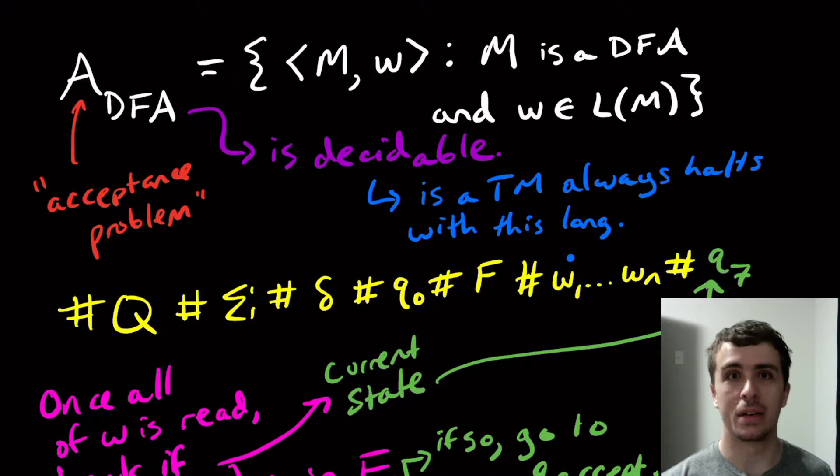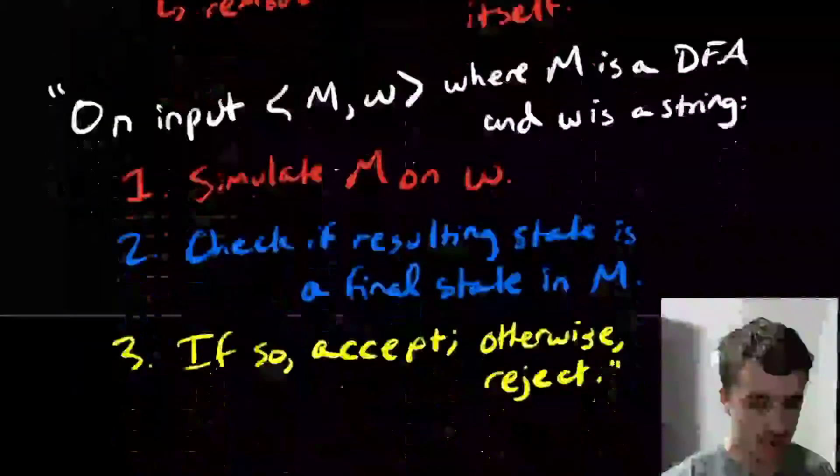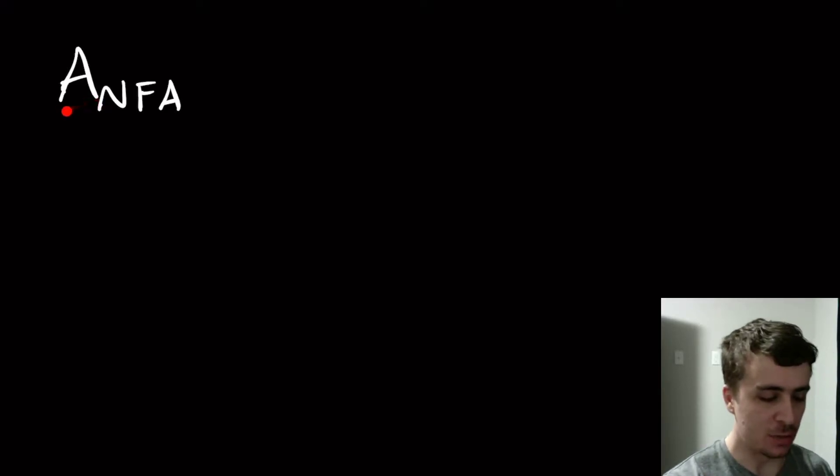Hi, welcome to another edition of Easy Theory. So we talked about the A_DFA problem before. Now let's move up a level to the A_NFA problem. So remember that the A here stands for the acceptance problem, and here's about NFAs.